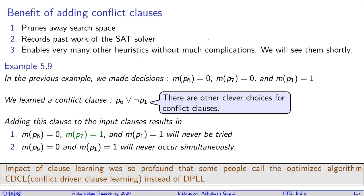So after adding this extra heuristic, it was observed that SAT solvers became really fast. And some people say that now we should change the name of the algorithm. Instead of calling it DPLL, we should call it CDCL, Conflict Driven Clause Learning.